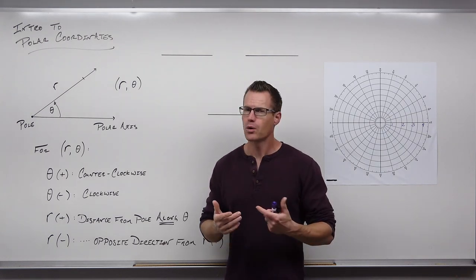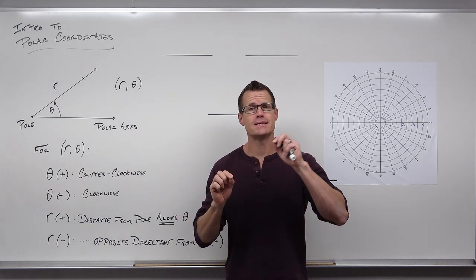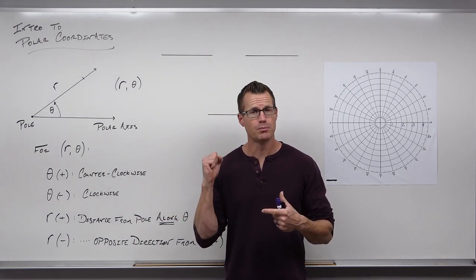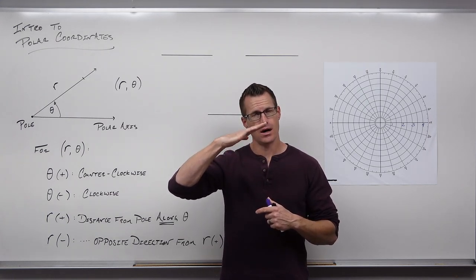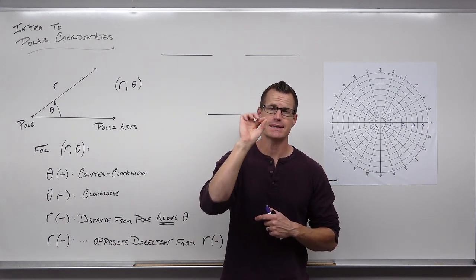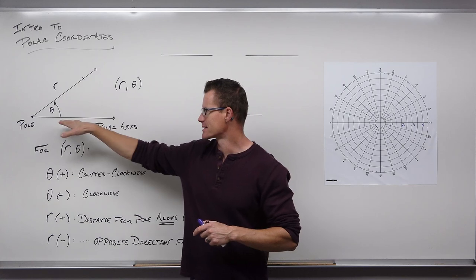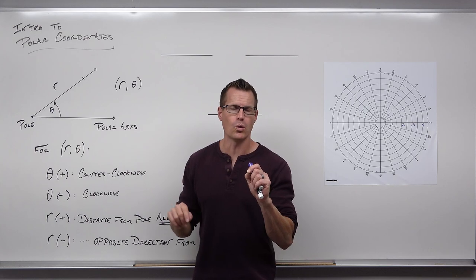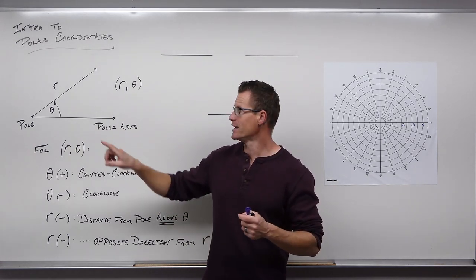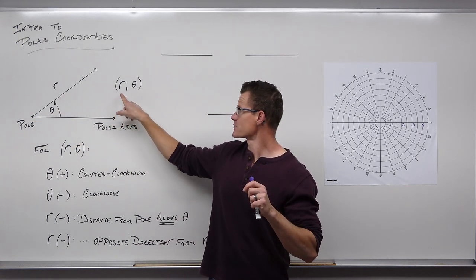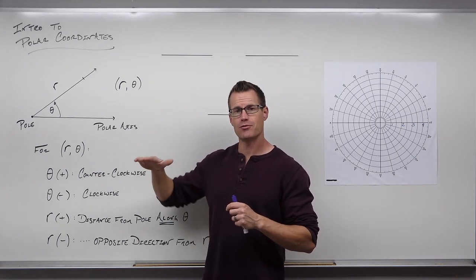So what in the world are polar coordinates? Polar coordinates are a way to graph points without using X and Y in a rectangle, but instead an angle and a distance. Polar coordinates have something called a pole, which acts like an origin, and a polar axis, which acts like the X axis. From there we can go positively or negatively a certain angle, and then from that pole a distance out — positive R or negative R.